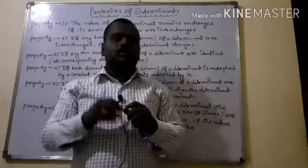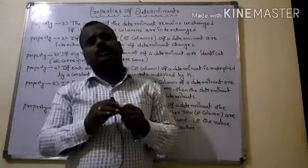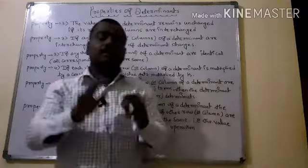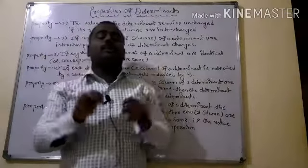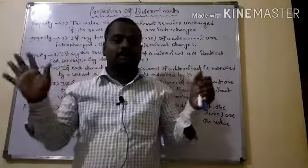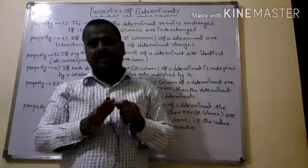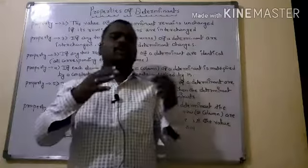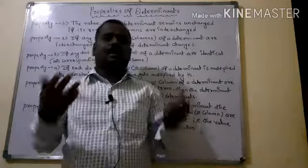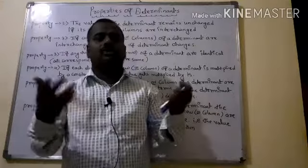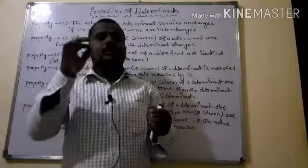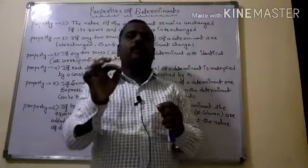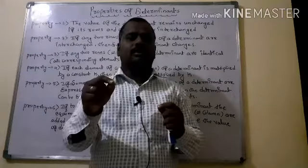I hope you know the properties of a determinant. There are six properties in total. In the old syllabus, the last one was a compulsory part where a question would arise. The first property says that if a determinant's rows and columns are interchanged — that is, the transpose of a matrix — then the determinant value remains unchanged.